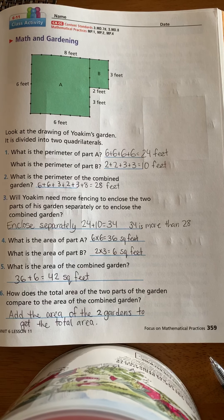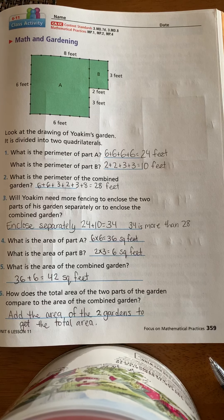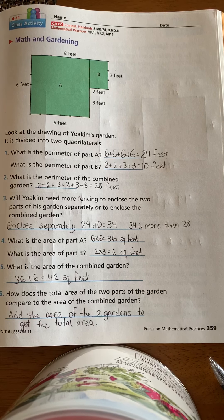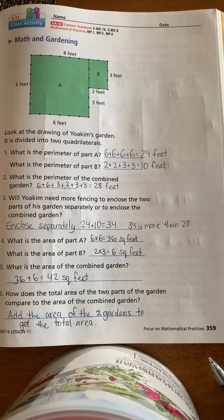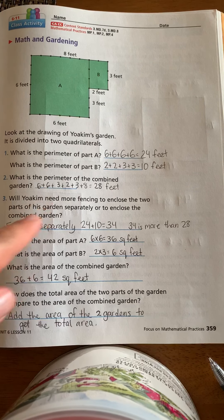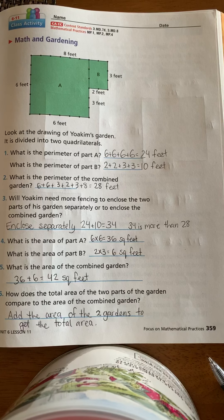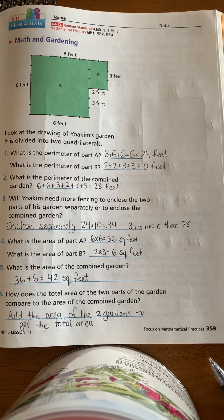What's the perimeter of part B? 2+2+3+3, which equals 10. What is the perimeter of the combined garden? So then I just added up all the sides. So 6+6+3+2+3+8 is 28 feet.